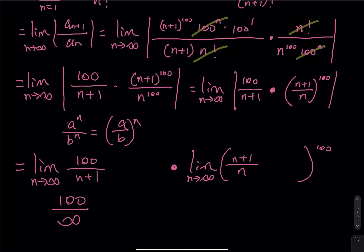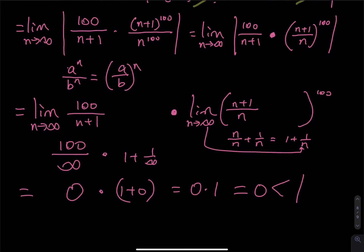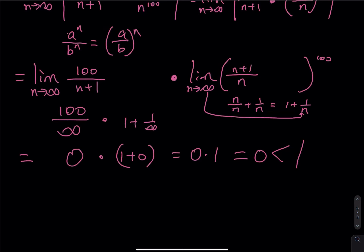For the first limit: 100 divided by infinity equals zero. For the second limit: (n+1)/n = 1 + 1/n; as n goes to infinity that equals 1, raised to the 100th power is still 1. So overall we have zero times 1, which equals zero. Zero is less than 1, so the series is convergent by the ratio test.